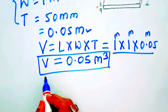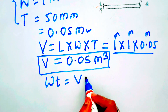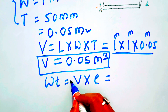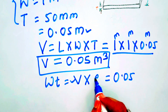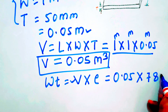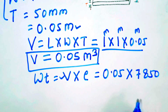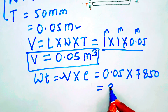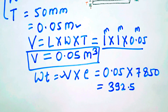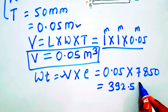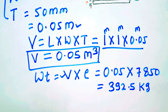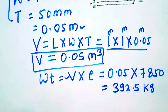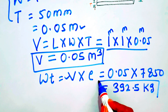To get the weight, we simply multiply the volume with rho. Rho for carbon steel is 7850. So we put the values: volume is 0.05, multiplied by rho which is 7850 for carbon steel. After multiplying these two values, we get 392.5. So the weight of this steel plate is 392.5 kg. The weight of a plate 1 meter long, 1 meter wide, and 50 mm thick is 392.5 kg.